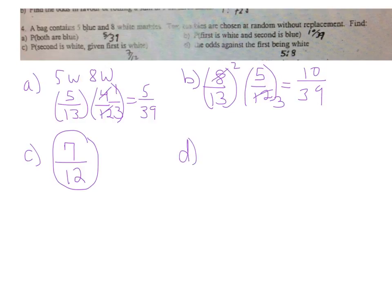So let's try D, the odds against the first being white. So we can look at that in terms of what would happen if it wasn't white. If it wasn't white, out of the 13, we would get blue 5 times and 8 white draws because there's 5 blue marbles and 8 white marbles. And so the odds against it being white would be 5 to 8. The odds for it being white would be 8 to 5. You see how that works, how we just reversed it, okay?